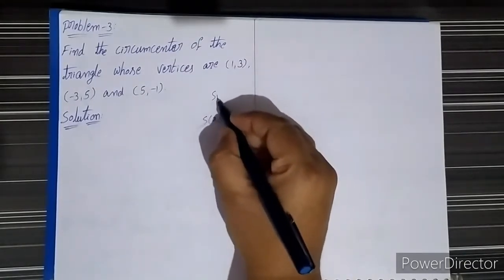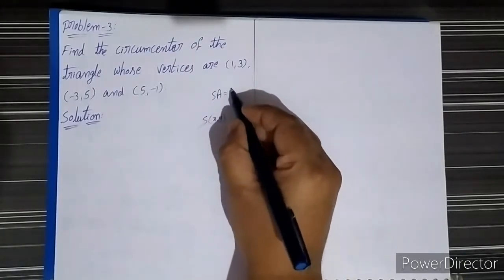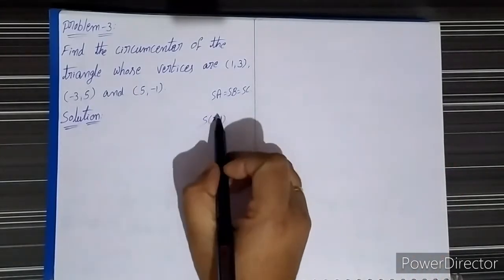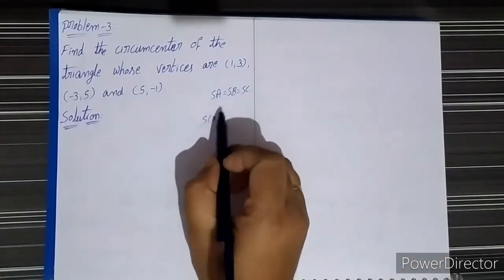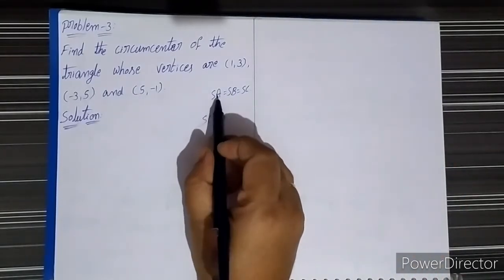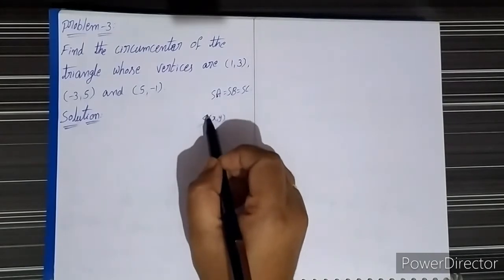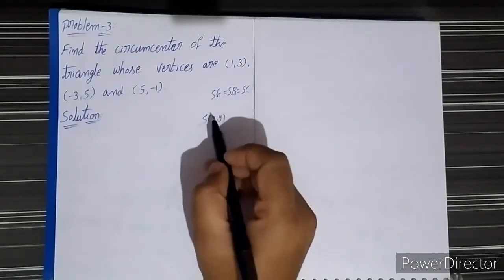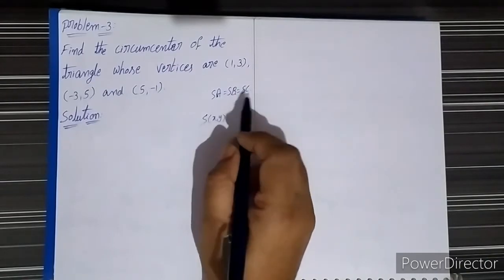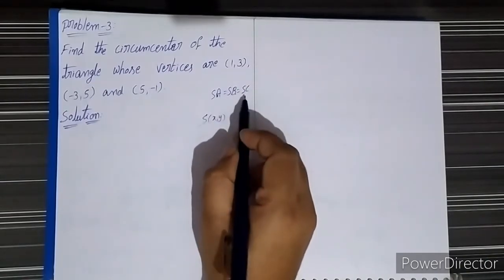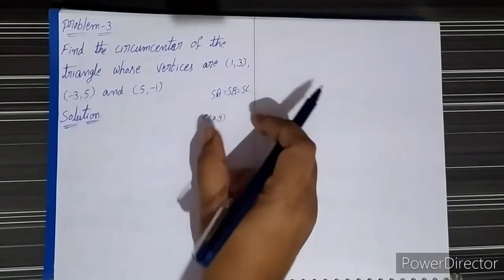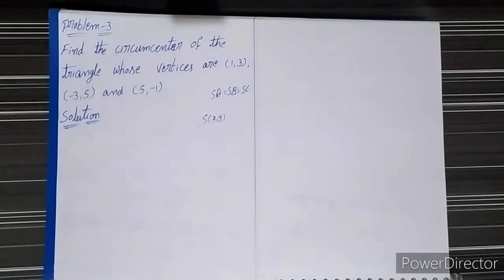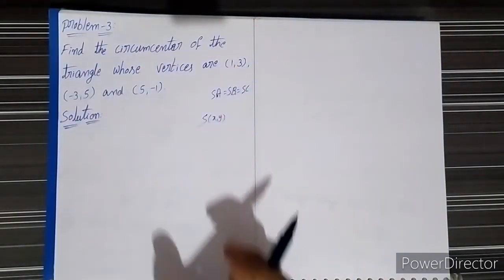Then we have SA equal to SB equal to SC. The distance from the circumcenter to vertex A equals the distance from the circumcenter to vertex B, equals the distance from the circumcenter to vertex C. They are all equal. This is our known statement, and by using this statement we can find out the circumcenter.